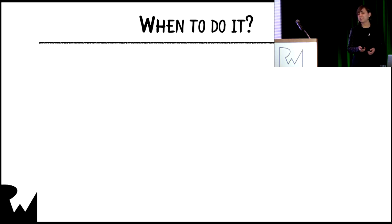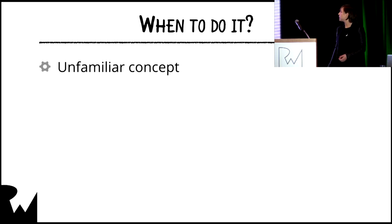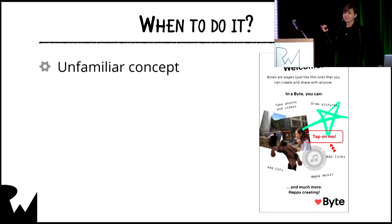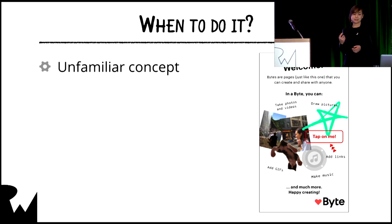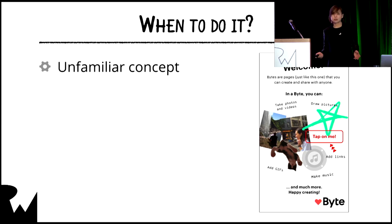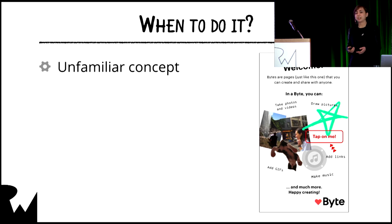So now the last question is when to do it. There are four basic user interface or user experience situations that might need explaining. The first one is an unfamiliar concept. For example, with the app Byte — Byte is a pretty awesome and unique application that lets you make rich collages of photos, videos, gifs, and sounds, and then show off your creations. It's kind of an app that lets people make small, tiny, mini apps inside. There's absolutely no app like it, so onboarding in their case is pretty crucial.